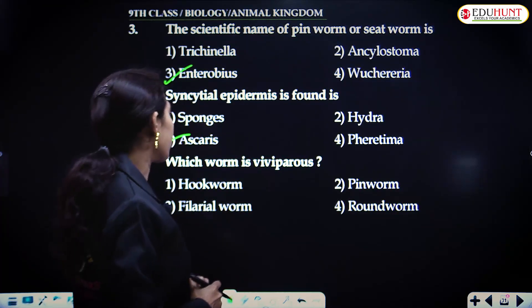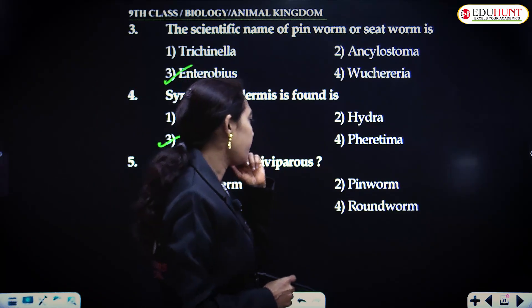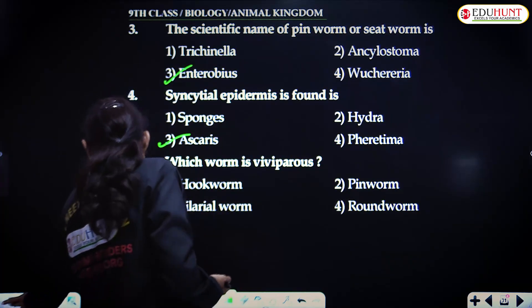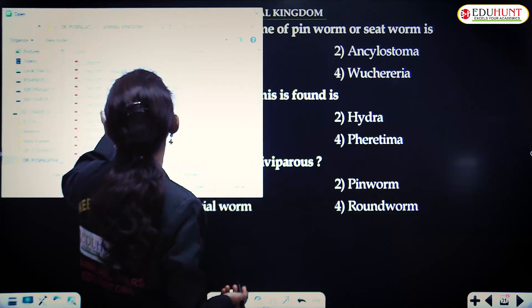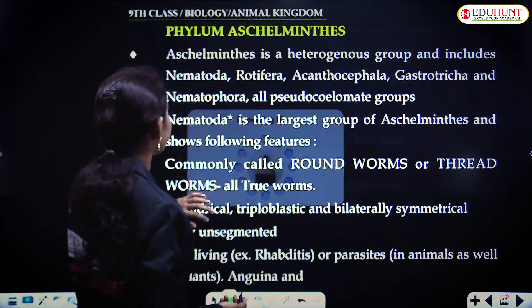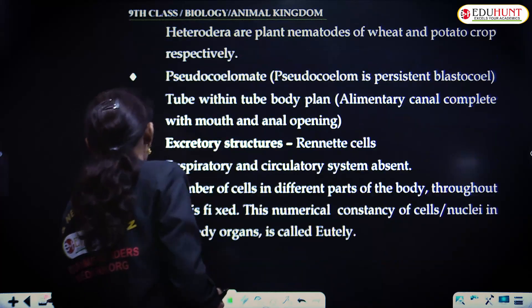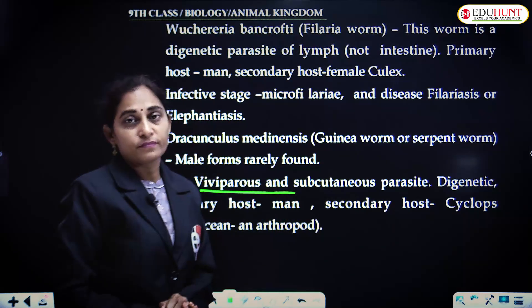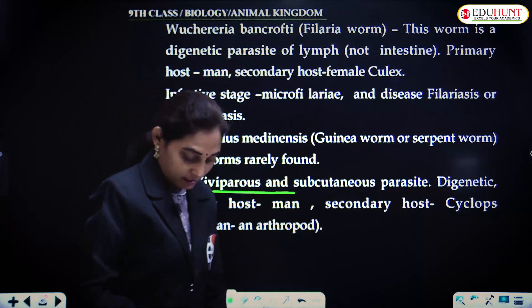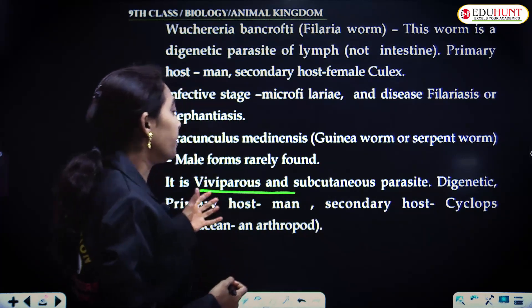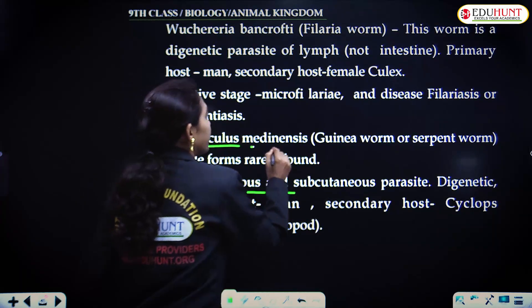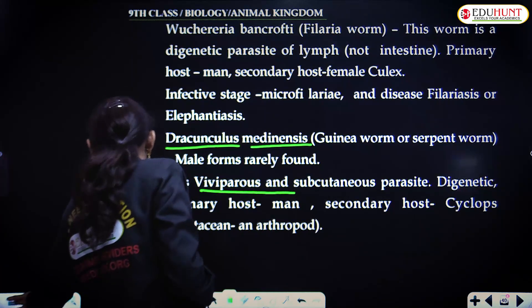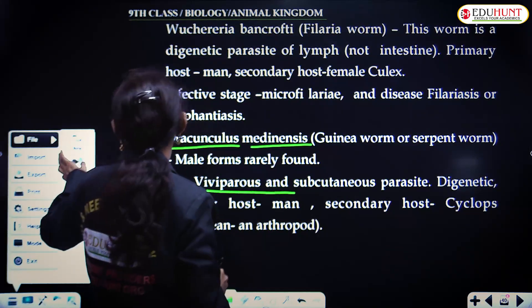Which worm is viviparous? Among hookworm, filarial worm, roundworm, and pinworm — it is the last worm, Dracunculus medinensis. Viviparous means these nematodes, without laying eggs, give birth to young ones. Dracunculus medinensis is called the serpent worm or guinea worm, and it is the viviparous worm of the Aschelminthes.